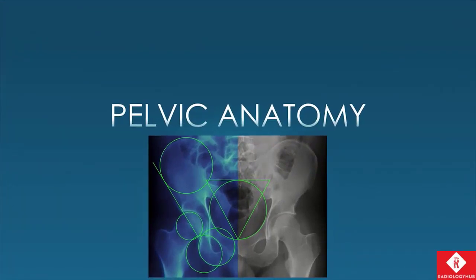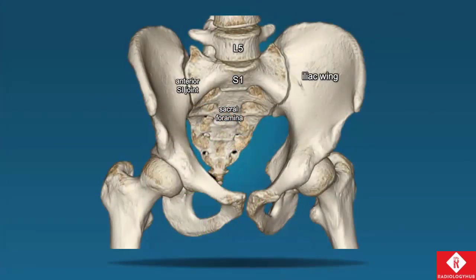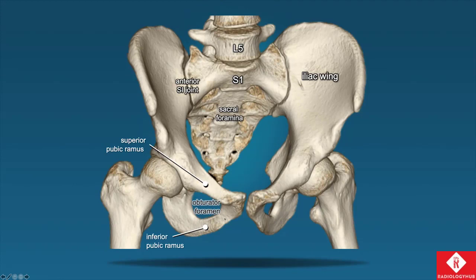Let's look at the pelvic anatomy. We have the iliac bone, the anterior SI joint highlighted here, and the superior and inferior pubic rami that surround the obturator foramen. We have the ischial spine posteriorly where some ligaments are involved, and the ischial tuberosity. That is our greater sciatic notch, which will come in handy when we talk about the vessels.